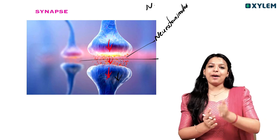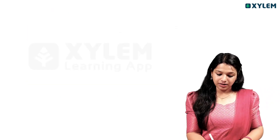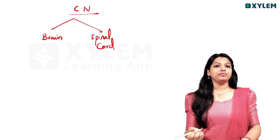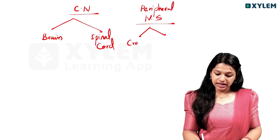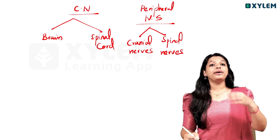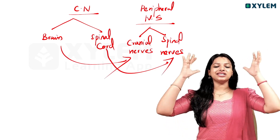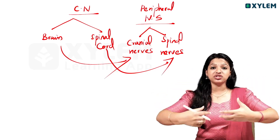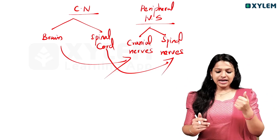The central nervous system is the brain and spinal cord. The peripheral nervous system includes cranial nerves and spinal nerves that branch out from the center of the brain and spinal cord to all body parts through different nerves.